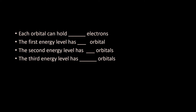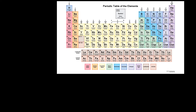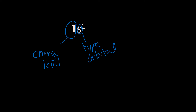Each orbital can hold two electrons. The first energy level has one orbital. The second energy level has four, and the third energy level can have up to nine. The number tells us the energy level, the letter tells us the type of orbital, and the superscript tells us the number of electrons in that orbital.